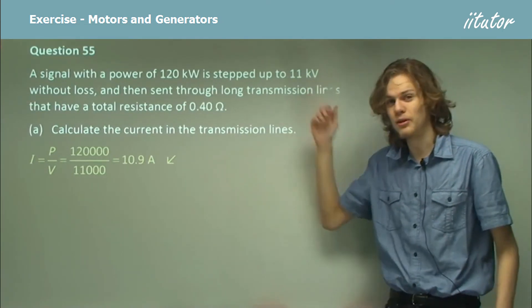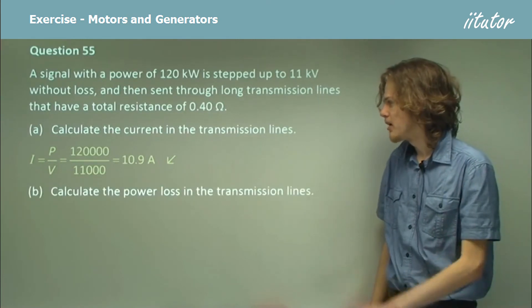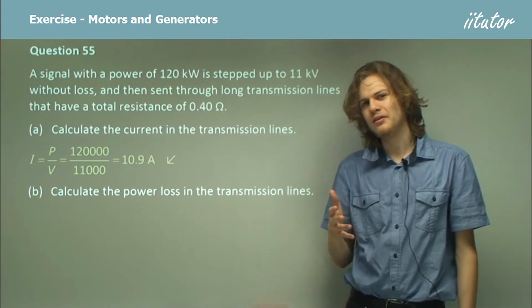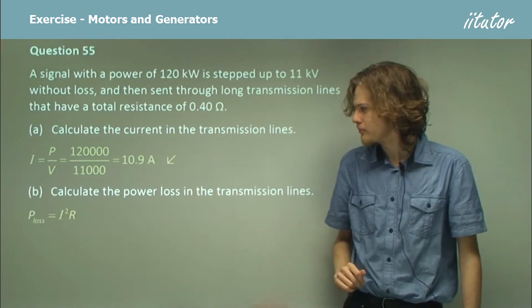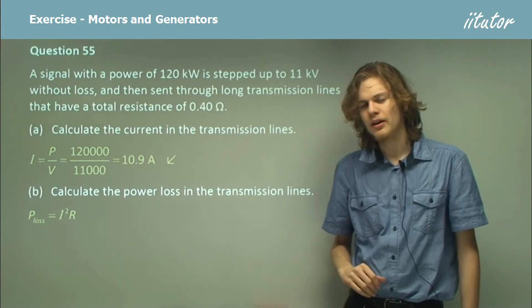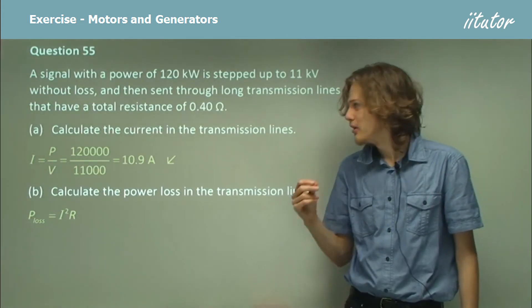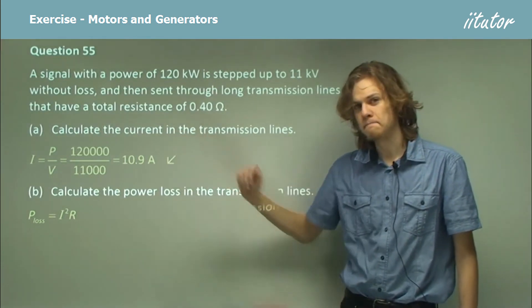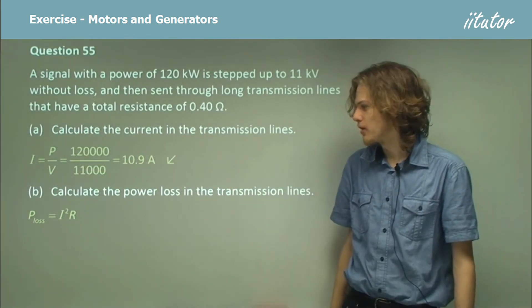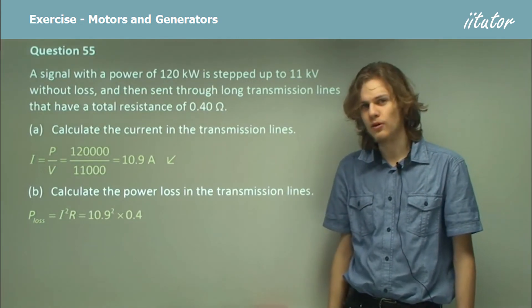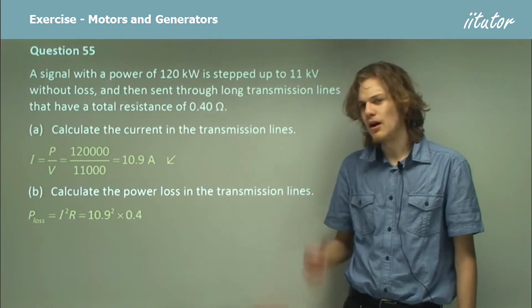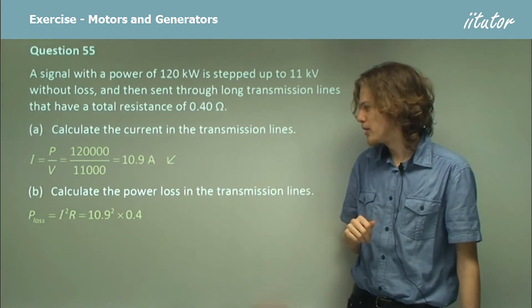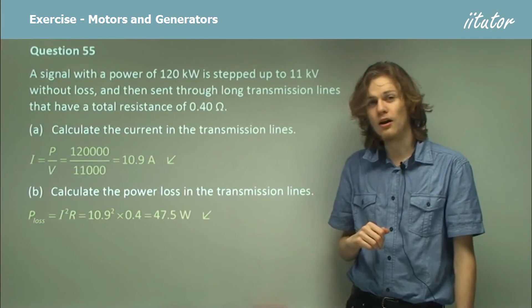Part B will, of course, be calculate the power loss in the transmission lines. I hope you remember the formula for this. Power loss equals I squared R. Now last time we were squaring 500. Now that we've transformed it to 11 kilovolts, we are only squaring 10.9. So our equation looks something like this: 10.9 squared times 0.4. Now the power loss for our last one was 100 kilowatts. For this one it's only 47.5 watts.